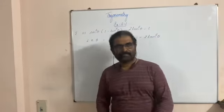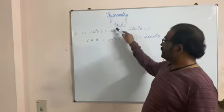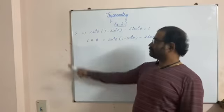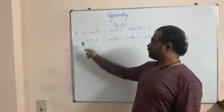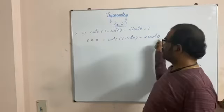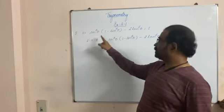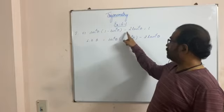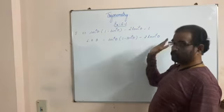Good evening. Today we are going to do Exercise 6.1, fifth question, first subdivision. Prove this identity: sec⁴θ into (1 minus sin⁴θ minus 2tan²θ) is equal to 1.